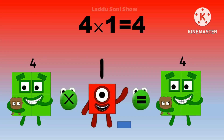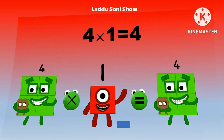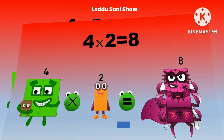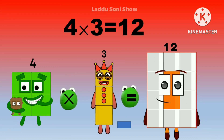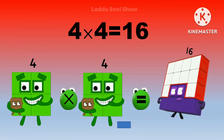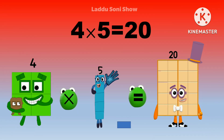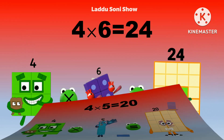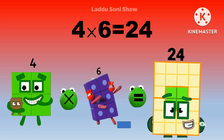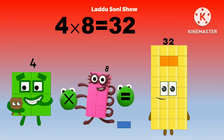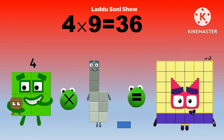Four ones are four. Four twos are eight. Four threes are twelve. Four fours are sixteen. Four fives are twenty. Four sixes are twenty-four. Four sevens are twenty-eight. Four eights are thirty-two. Four nines are thirty-six.